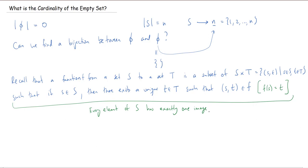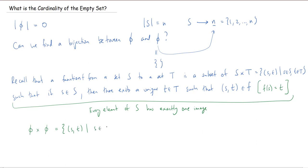No more, no less — you can't send s to nothing, and you can't send s to multiple elements. Can we do that for the empty set, particularly from the empty set to the empty set? Well, I need to look at the Cartesian product of the empty set with itself. This is all pairs (s, t) where s is in the empty set and t is in the empty set. But if you have the empty set, how do you have an s in it? You can't. Similarly, you can't have a t, so we can't build any pairs — there are no elements in the set. So the Cartesian product of the empty set with the empty set is, again, the empty set. It's like 0 times 0 equals 0.